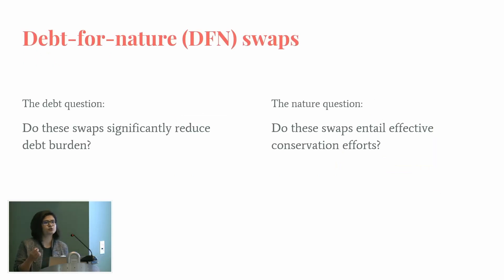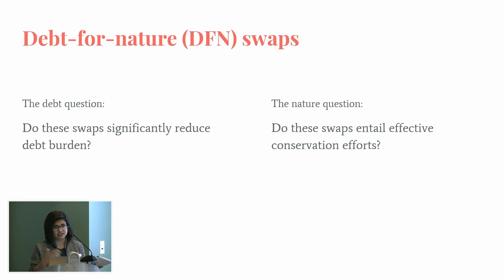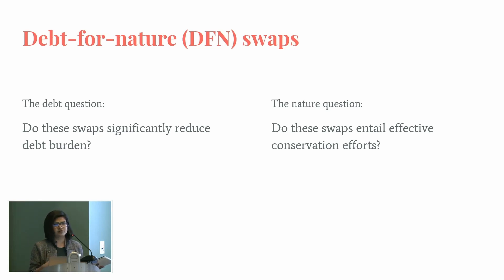We're asking two crucial questions. Debt for nature swaps promise to jointly answer the questions of debt and conservation. Do these swaps significantly reduce debt burden? And do these swaps entail effective or quality conservation efforts? More or less — are these swaps answering both our debt question and our nature question?